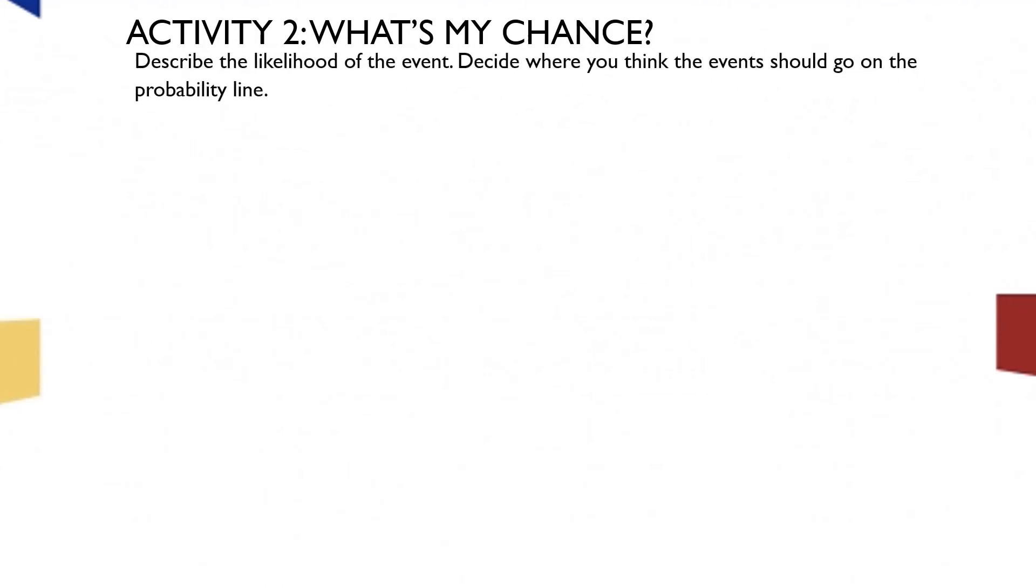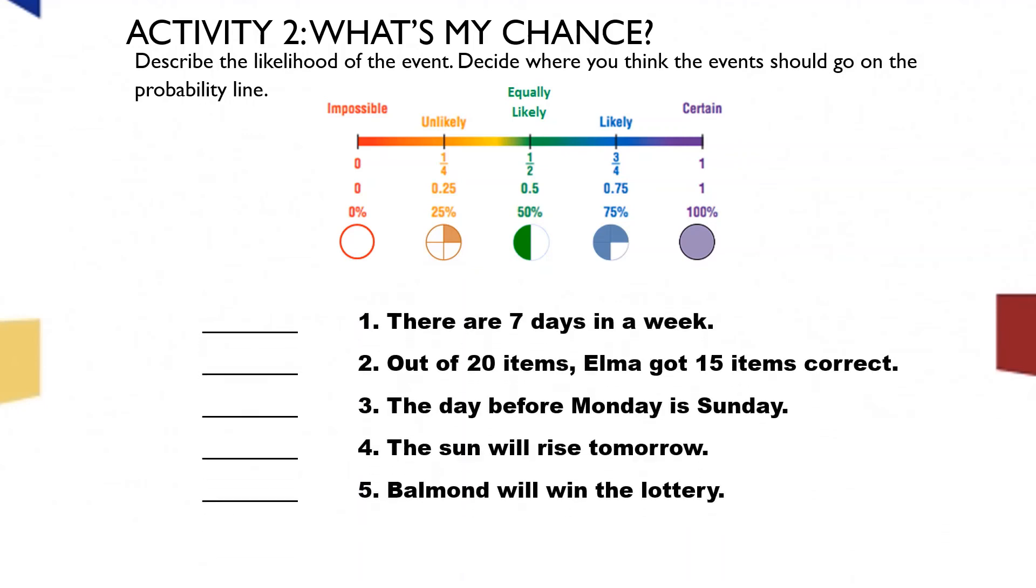Let's proceed to the next activity. For activity 2, we have what's my chance? Instruction. Describe the likelihood of the event. Decide where you think the events should go on the probability line. Try to look at the line. Zero again for the impossible, and 100% for the certain or sureness. Now, I will give you 1 minute to answer this activity.